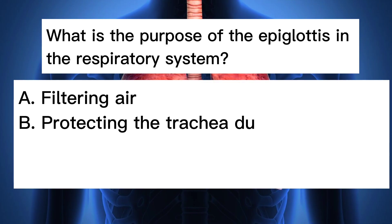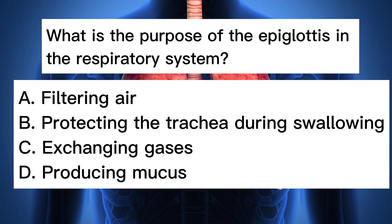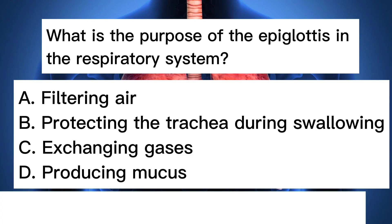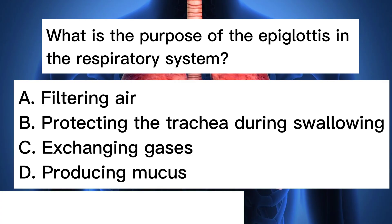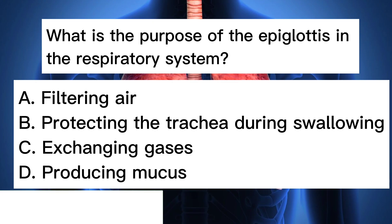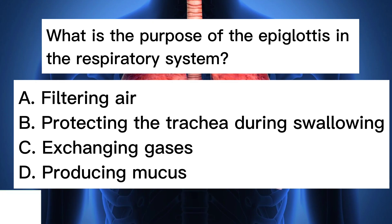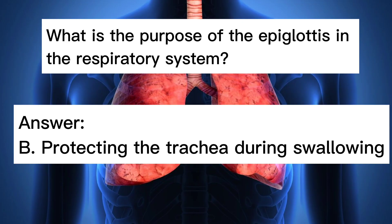What is the purpose of the epiglottis in the respiratory system? A. Filtering air. B. Protecting the trachea during swallowing. C. Exchanging gases. D. Producing mucus. Answer: B. Protecting the trachea during swallowing.